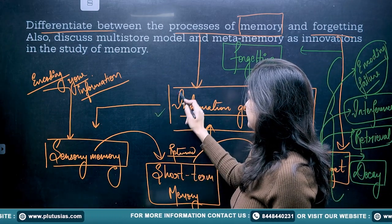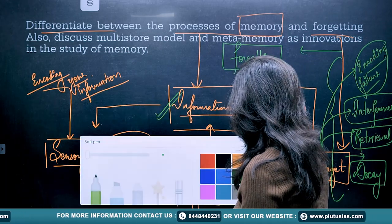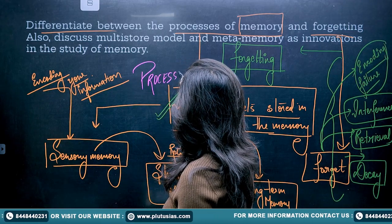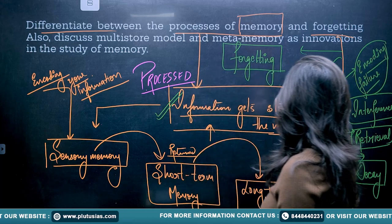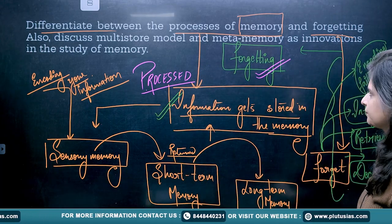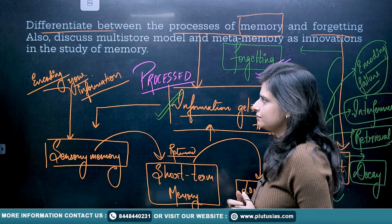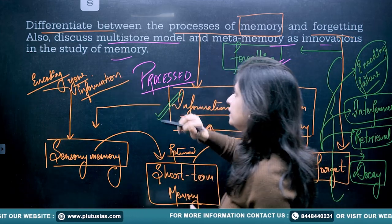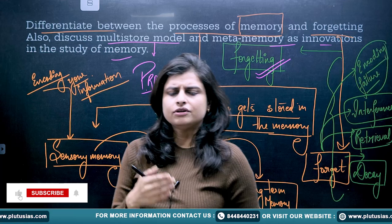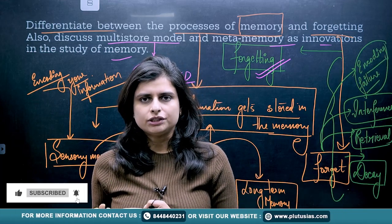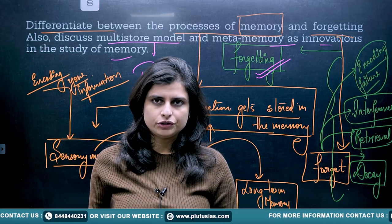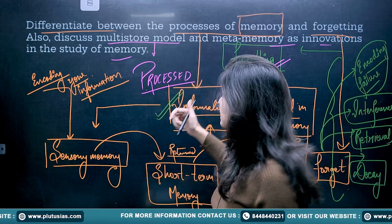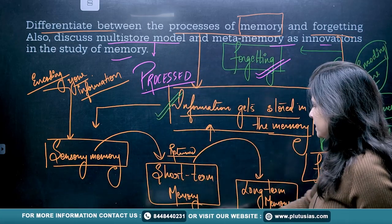So I have discussed the information processing part — how the information is processed — and then I discussed how the information is forgotten. That was the first part of the question. Now they say: also discuss the multi-store model and meta-memory as innovation in the study of memory. The multi-store model — encoding happens first, then processing, then decoding. That model is very basic and clear to everyone.